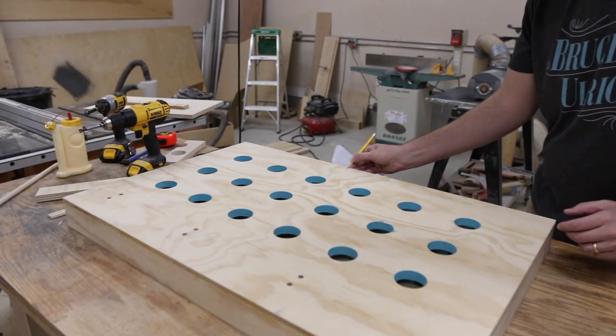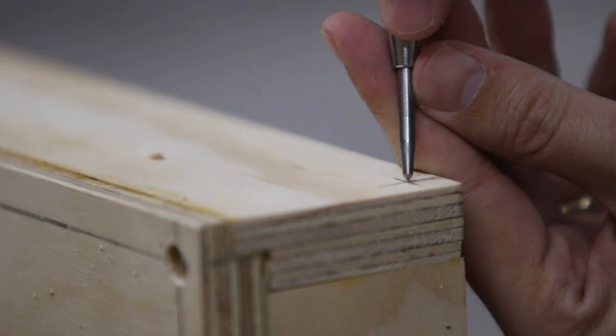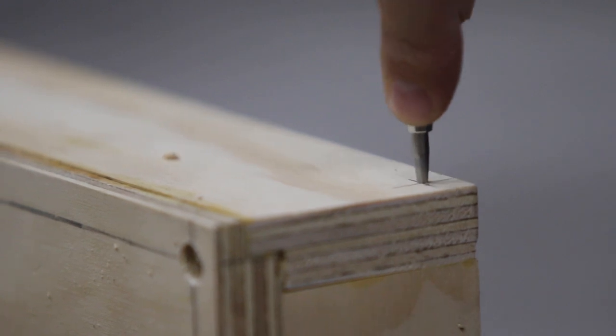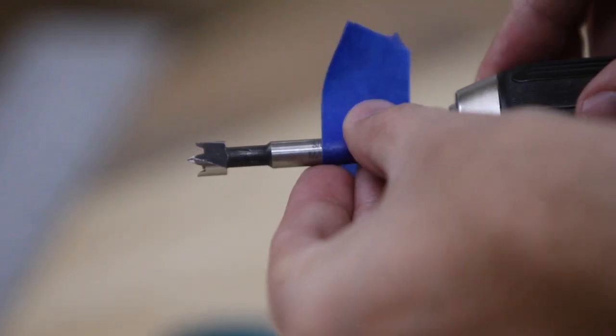I marked some lines all the way around the front so I could add some dowels. Then I set a flag on my drill with some tape so I would know how deep to go with the drill.